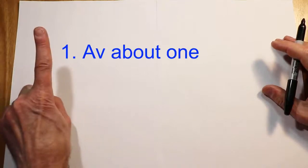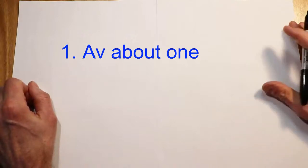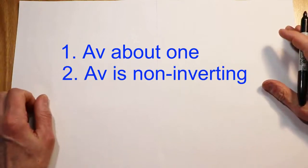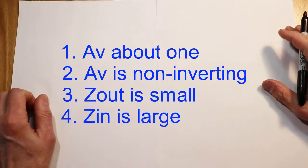There's a handful of characteristics common to all voltage followers. These circuits have a voltage gain of one, so they're referred to as buffers. It's a non-inverting gain. They typically have a low output impedance and a high input impedance.